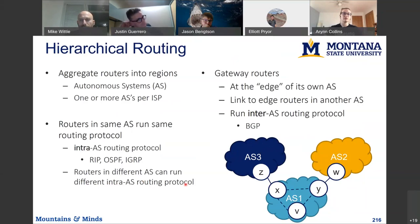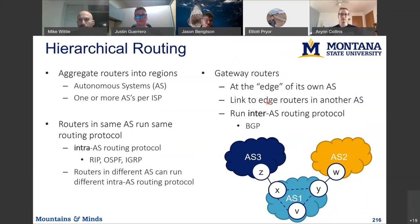Routers on the edge of these autonomous systems connect to each other and exchange reachability information using an inter-AS routing protocol. So we have intra-AS routing running inside each autonomous system, and they communicate reachability to the different subnets contained in the AS via an inter-AS routing protocol. At this point, there's really only one inter-AS routing protocol, which is BGP.